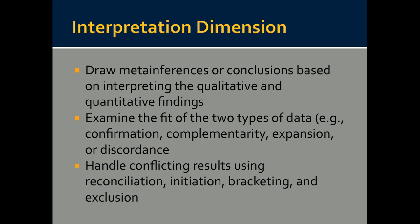Next is the interpretation dimension. This involves interpreting the meaning of the mixed findings, drawing meta-inferences or conclusions based on interpreting the qualitative and quantitative findings, and then examining for fit of the two types of data. When you bring the qualitative and quantitative data together: is there confirmation, complementarity, expansion, or discordance? When results conflict, you have procedures including reconciliation, initiation, bracketing, and exclusion.